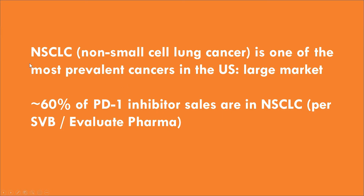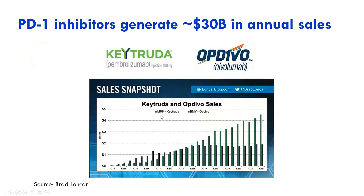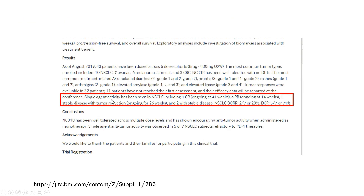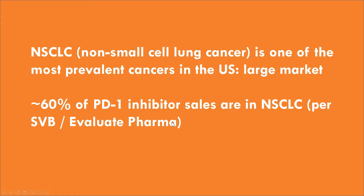Lung cancer is actually the biggest subset of the PD-1 market. These drugs are approved to treat a bunch of different diseases — first in melanoma, then in lung cancer and others — but 60% of the sales are in lung cancer. That's one reason why they highlighted lung cancer here, and why investors got excited: there was some activity in this biggest subset of the market. They didn't say anything about the other indications, which could be a little concerning, but we'll get back to that.